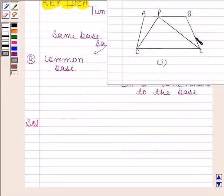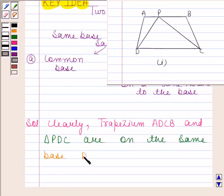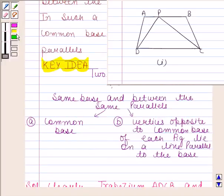This is the first figure given to us. Now clearly, trapezium ADCB and triangle PDC are on the same base. So this verifies our point A.